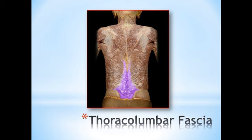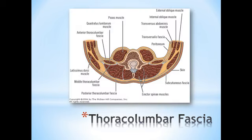The posterior layer also travels laterally over the erector spinae and forms the lateral raphe right at the lateral aspect of the erector spinae. So the lateral raphe is here.